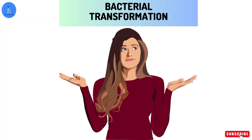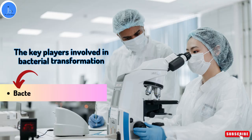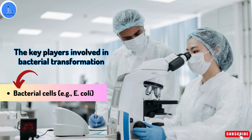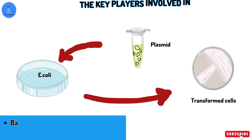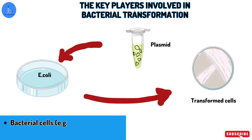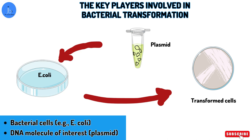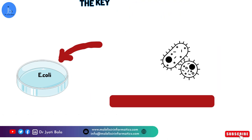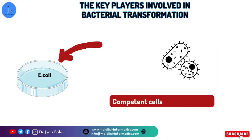To better understand bacterial transformation, let's break down the key players involved. First, we have the bacterial cell, typically E. coli, known for their remarkable ability to uptake foreign DNA. Then we have the DNA molecule of interest, often carried on a circular piece of genetic material called a plasmid. The transformation process begins by creating small pores on the bacterial cell membrane. These pores can be induced using various techniques such as heat shock or chemical treatment.